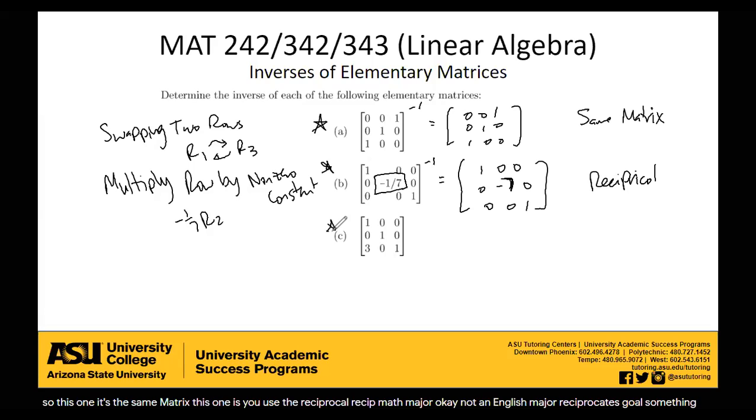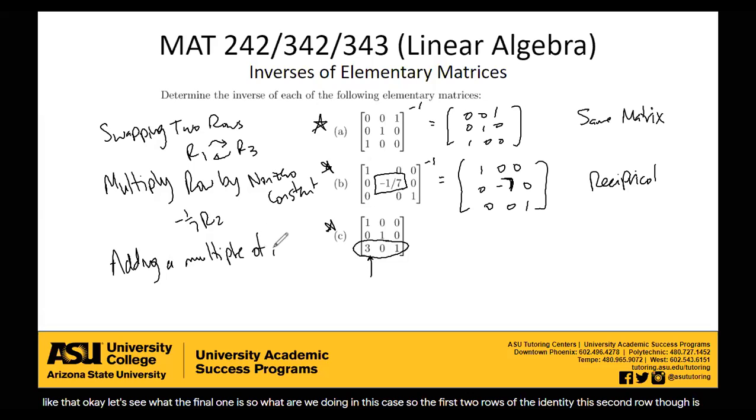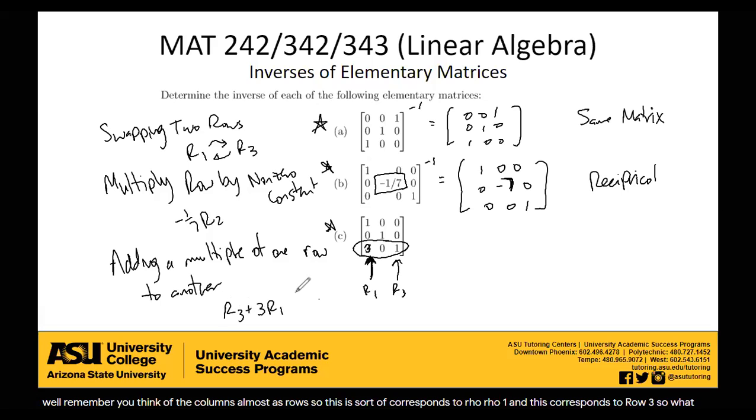Okay, let's see what the final one is. So what are we doing in this case? So first two rows are the identity. This third row, though, is the identity with this extra three here. So this corresponds to adding a multiple of one row to another. Specifically, what are we doing? Well, remember, think of the columns almost as rows. So this sort of corresponds to row one, and this corresponds to row three. So what we're doing is we're taking three times row one and adding it to one times row three. And this will, of course, be changing the third row because this is in the third row position. So we're altering the third row by adding three times row one.